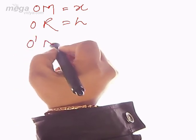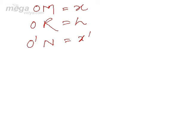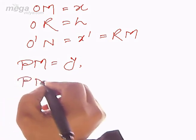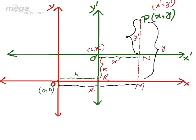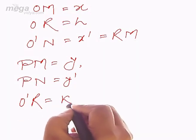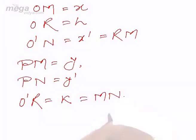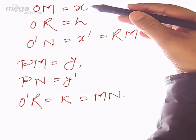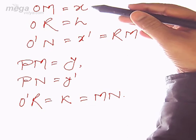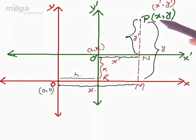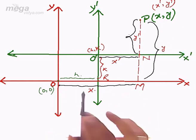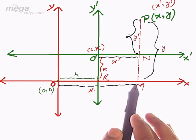PM = Y, PN = Y-dash, and O-dash R = K, which is equal to MN. Now you have to find the relationship between X-dash and X. We will use the figure and see: PN and MN we can make an equation; similarly, OM, OR and RM we can make a relation.